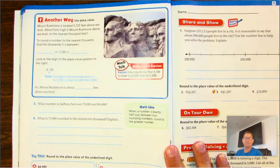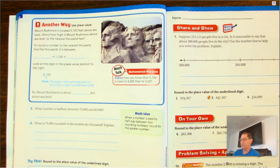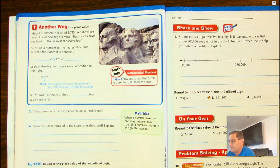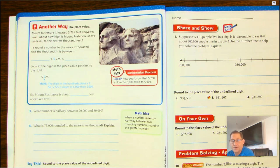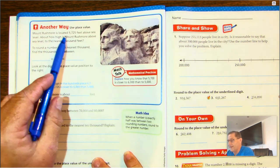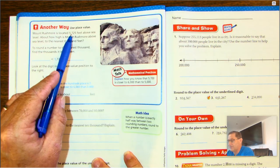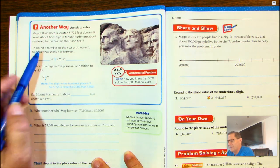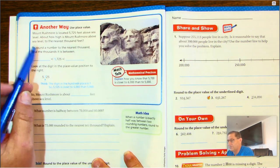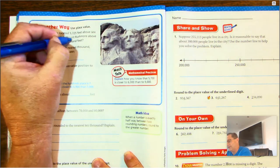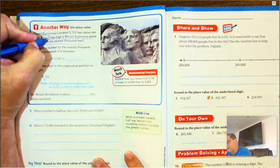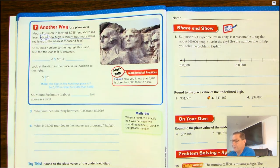On page 16, we can also use the idea of place value — and most often I find myself using place value. In this example: Mount Rushmore is located 5,725 feet above sea level. About how high is Mount Rushmore above sea level to the nearest thousand feet? We're going to underline this. The keyword 'about' means don't give an exact number — we're going to round.